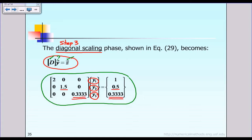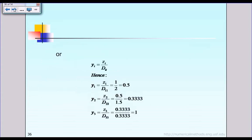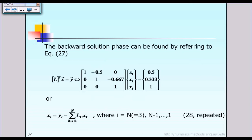At the end of step three we solved: y1 equal to this value, y2 equal to 0.333, and y3 equal to 1. That is the end of step three — diagonal scaling.